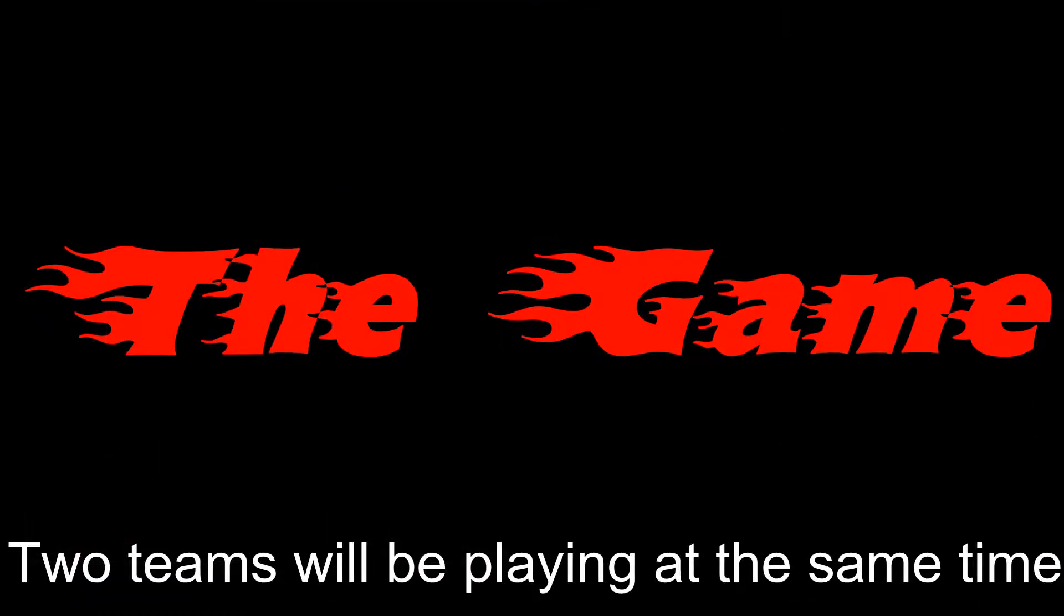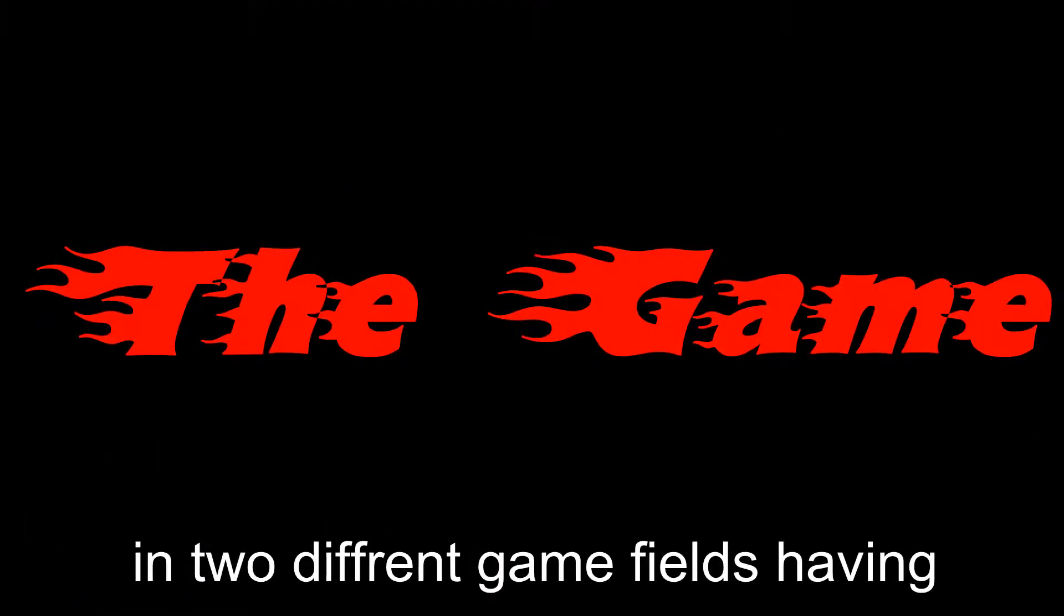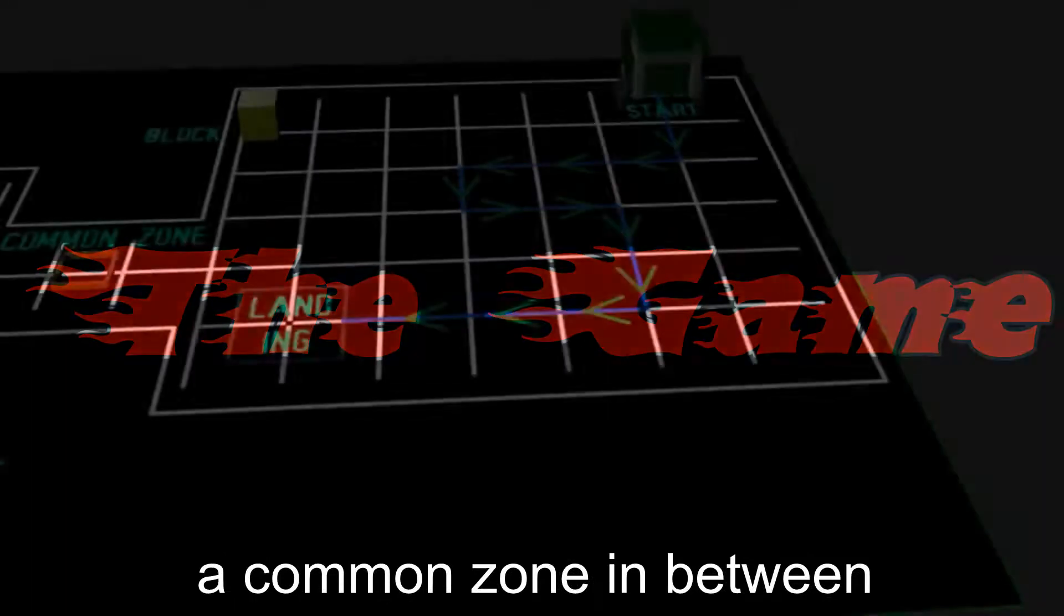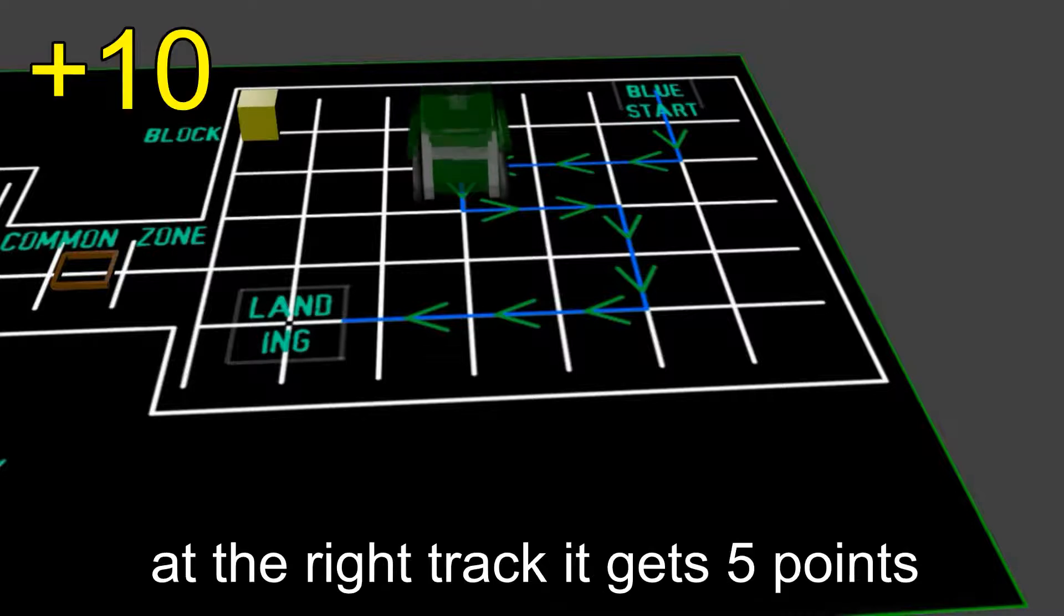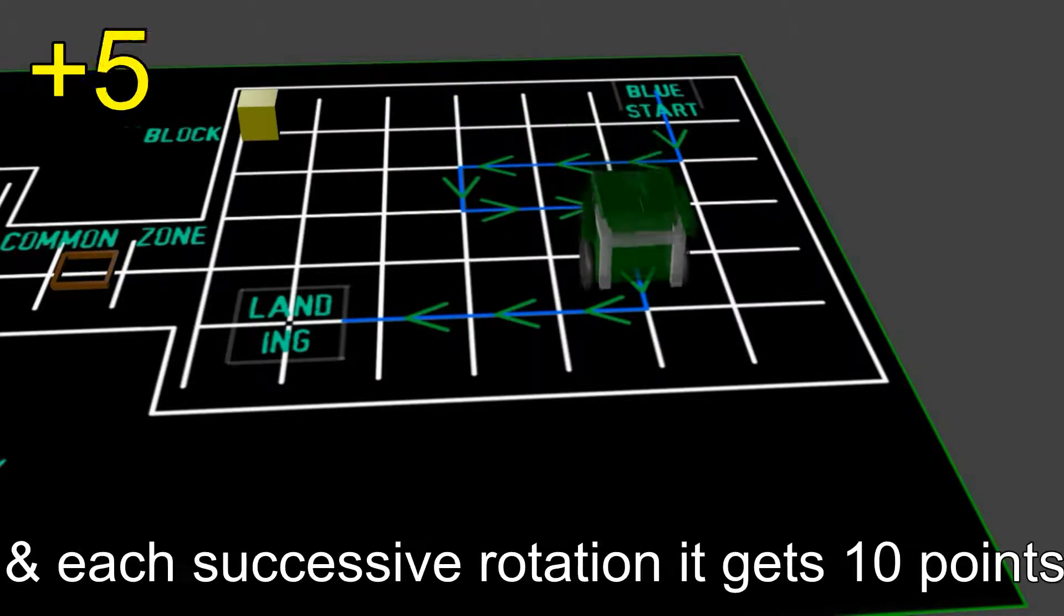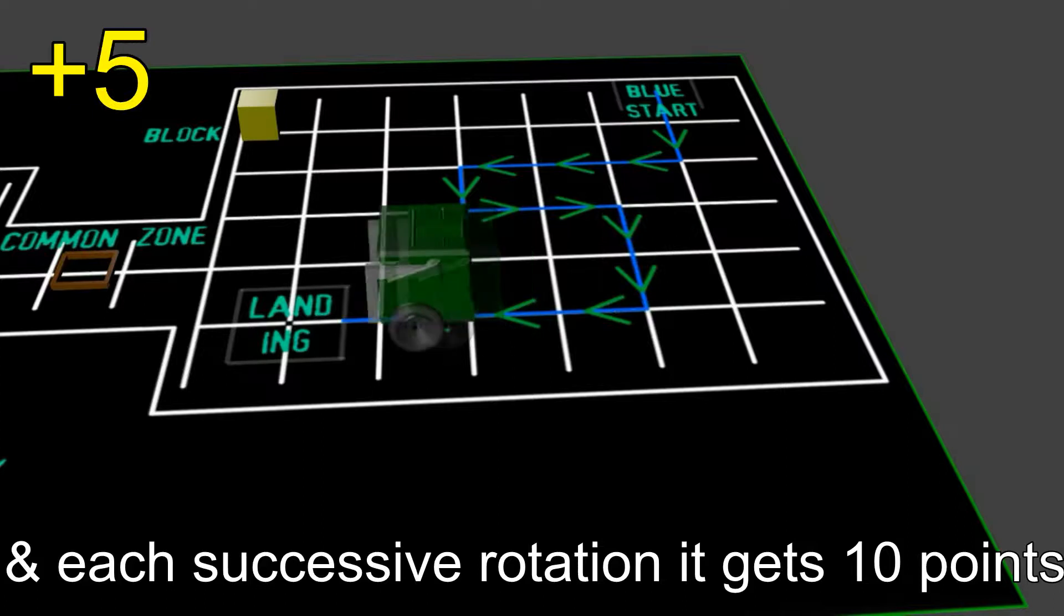Two teams will be playing at the same time in two different game fields, having a common zone in between. Each line the robot successfully crosses on the right track, it gets 5 points. And each successive rotation, it gets 10 points.